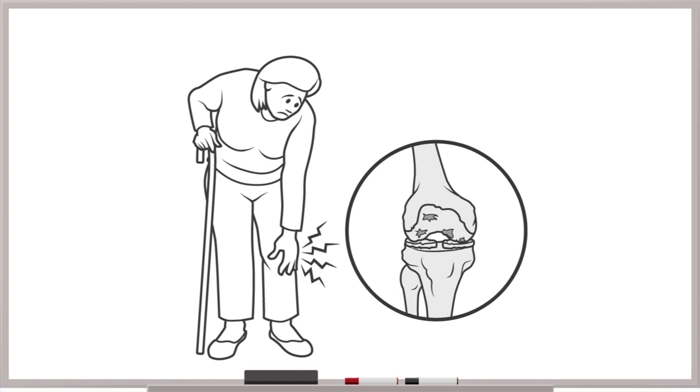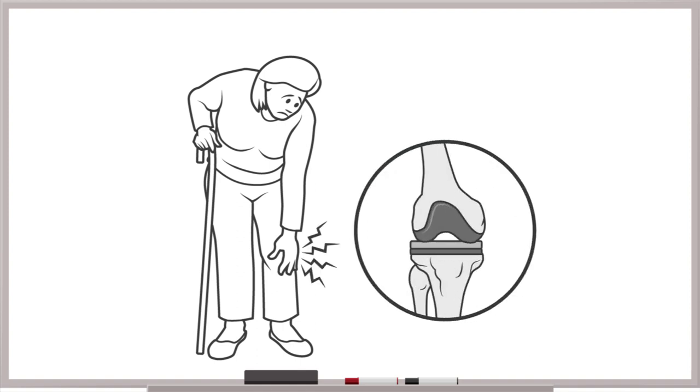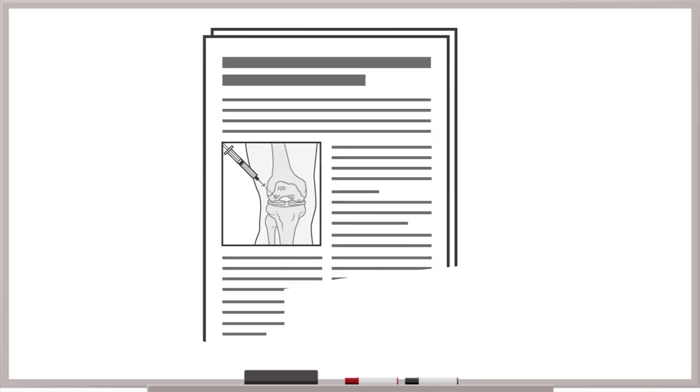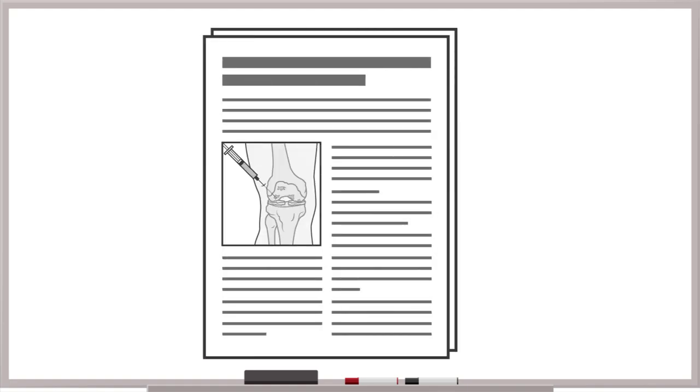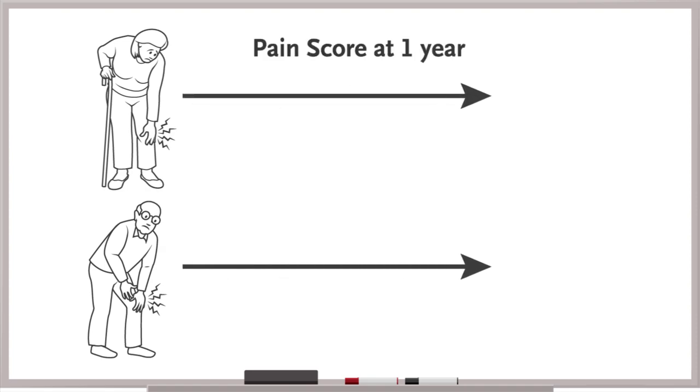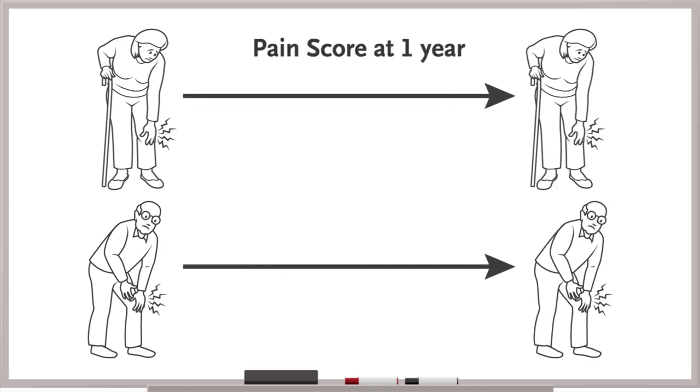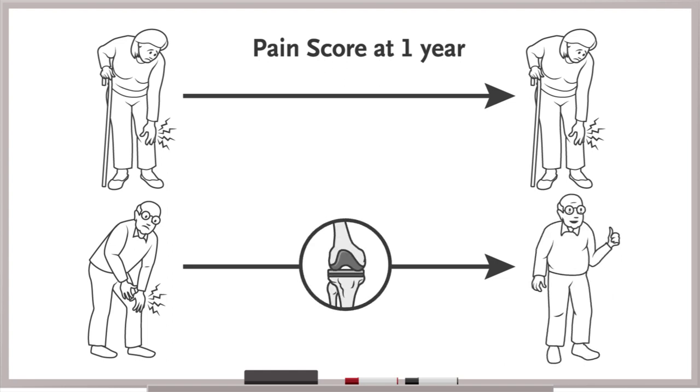Or consider whether people with osteoarthritis of the knee have pain is of course affected by whether they've undergone a knee replacement. Therefore, a clinical trial evaluating a medication for knee pain from osteoarthritis in which the primary outcome is a pain score at one year needs to account for the competing risk that participants in the trial underwent a knee replacement during the study period.